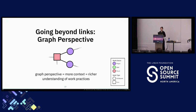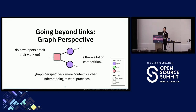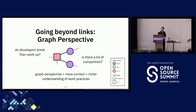For example, by examining multiple issues and PRs, we can see if developers tend to break their work up into smaller chunks for review, or if there's a lot of competition in certain areas of a project. This graph perspective is what we've nicknamed the PR issue graph, and for the rest of the talk I'll be showing you some of the hidden insights we found lurking in it.